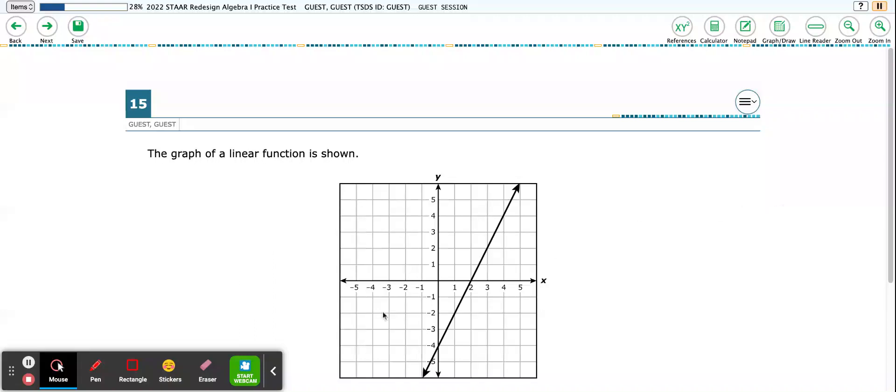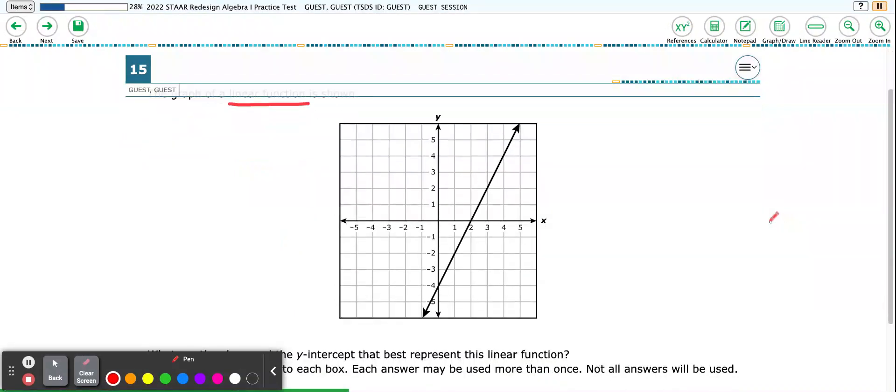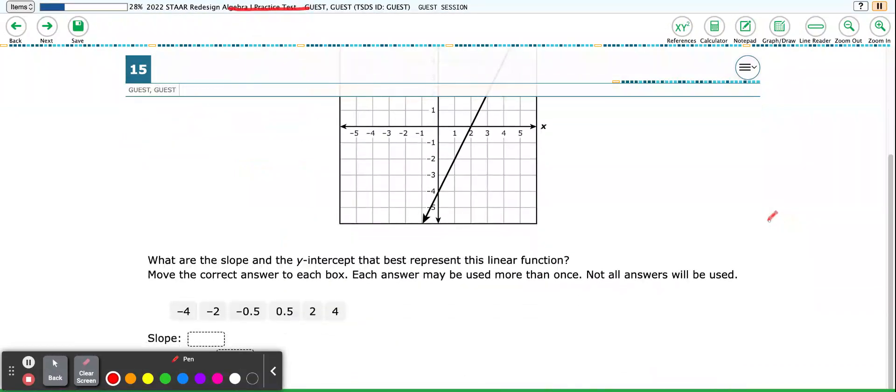So we come to number 15, and it gives us the keyword linear function. That's very important. So I've noticed some things about this linear function. If I go to the question, it says: